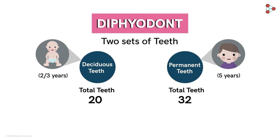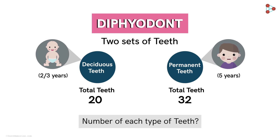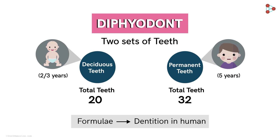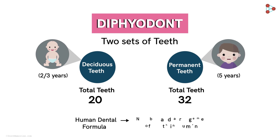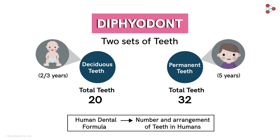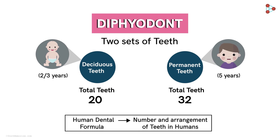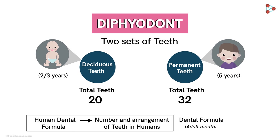Now can you tell me the number of each type of teeth? Is it fixed or random? It is definitely fixed. You will be surprised to know that there are formulae to understand the dentition pattern in different animals including humans. They are called the dental formulae. The number and the arrangement of the teeth in humans form the human dental formula. For an adult human mouth, the dental formula is given as 2 1 2 3 / 2 1 2 3.